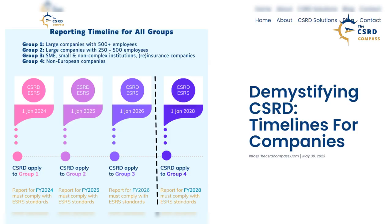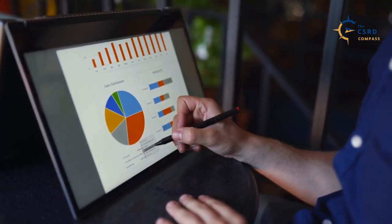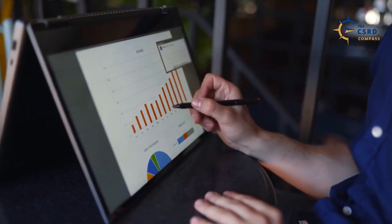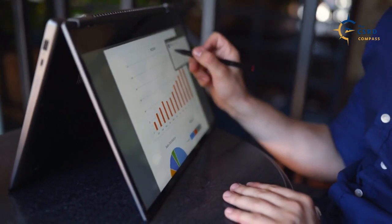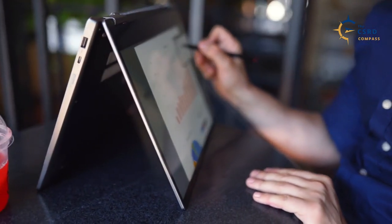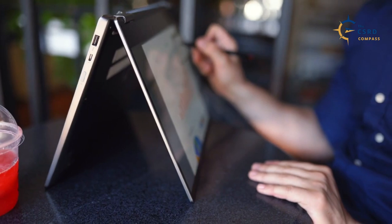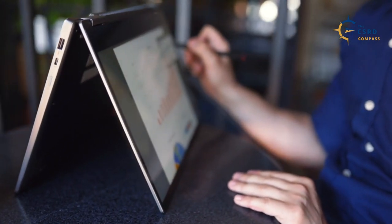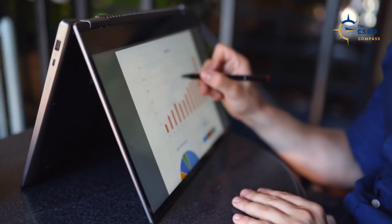Please take a look at our blog, 'Demystifying CSRD: Timelines for Companies,' for a detailed explanation on the implementation timelines for different types of companies who must comply with the CSRD. You can find the link to this blog in the description of this video. You also need to know what kind of information you're expected to disclose. The CSRD requires companies to disclose material sustainability information by following the European Sustainability Reporting Standards, ESRS.